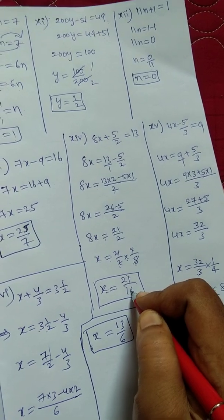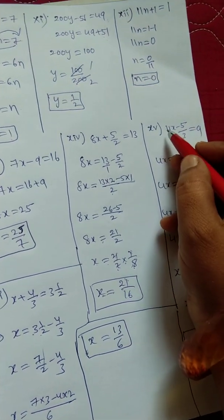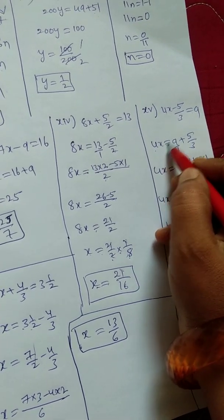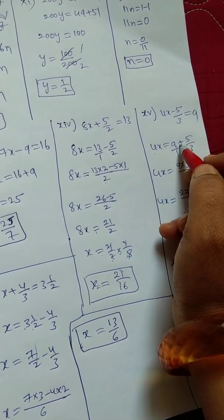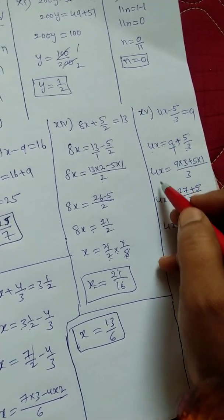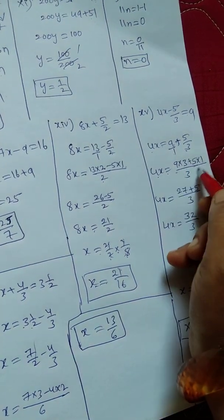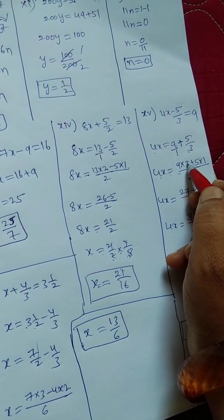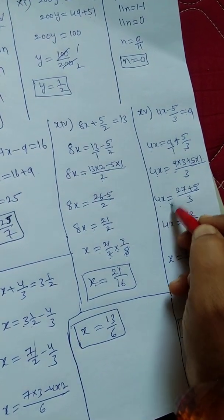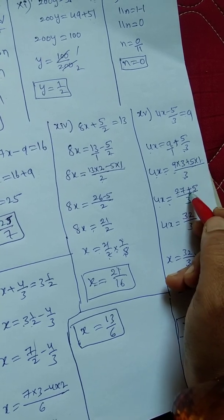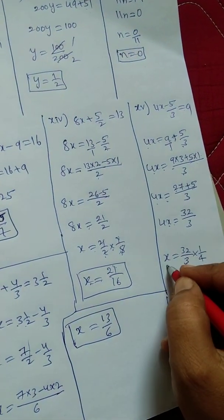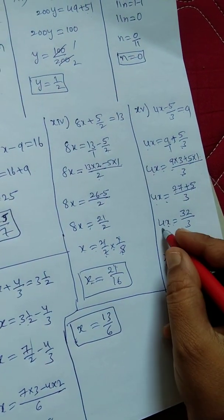Next, 15th bit: 4x minus 5 by 3 equals 9. So 4x equals 9 plus 5 by 3 — transpose of minus becomes plus. To add these, take the LCM. 4x equals 27 by 3 plus 5 by 3. 9 threes are 27, plus 5 ones are 5. So 4x equals 32 by 3.